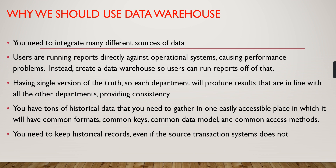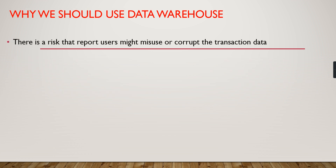You need to keep historical records even if the source transaction system does not — this is the concept behind slowly changing dimensions. For example, if an employee moves from department one to department two, the source system may only maintain the latest department. But a data warehouse is capable of maintaining how many departments an employee has moved through since joining. That kind of historical tracking can be achieved in a data warehouse.